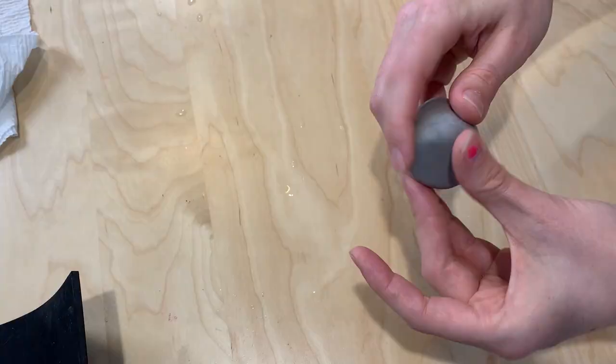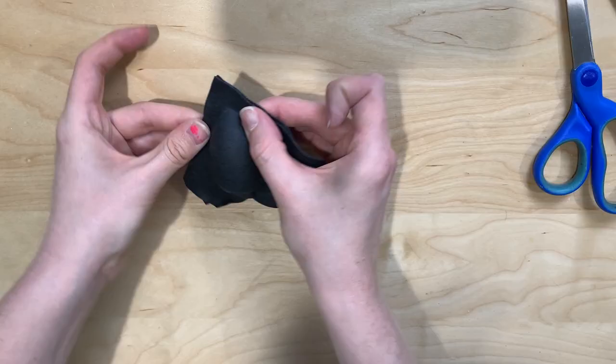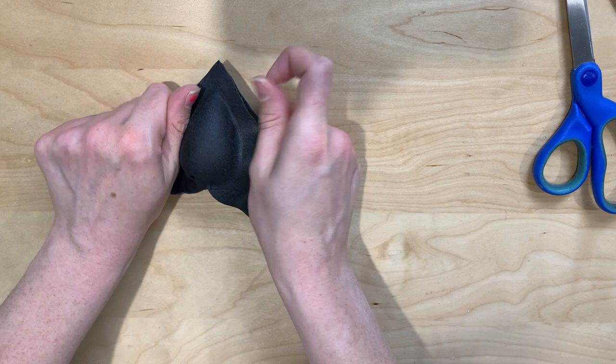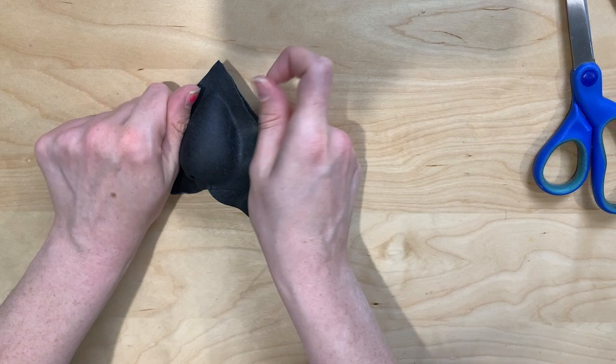I created the pommel entirely as a separate piece. I started by sculpting the egg bottom section out of foam clay, and after it was dry, I covered it in a lovely little Worbla sandwich.